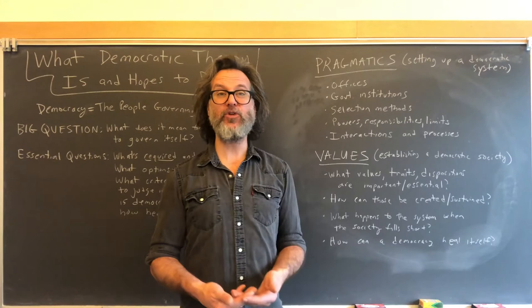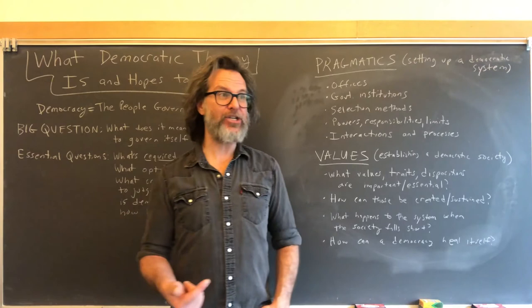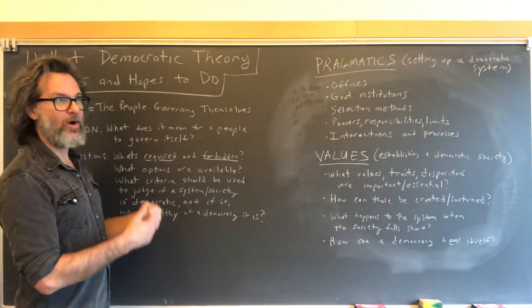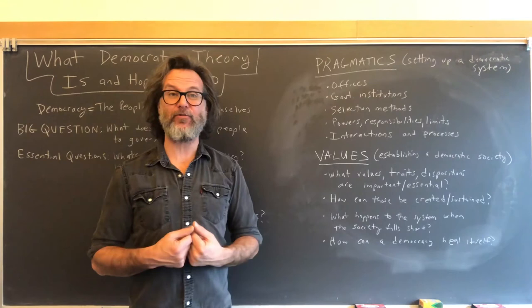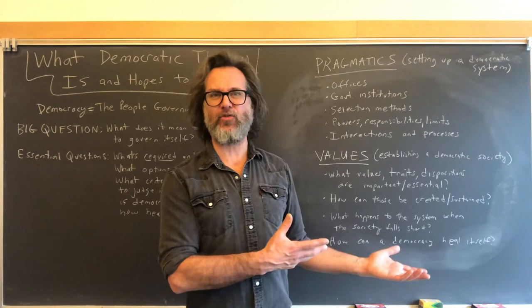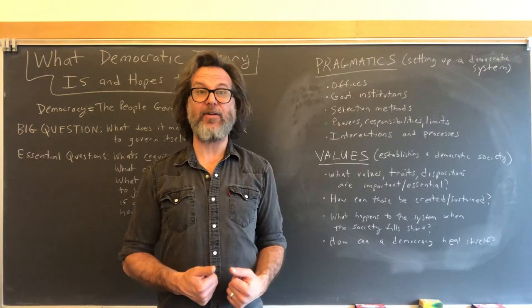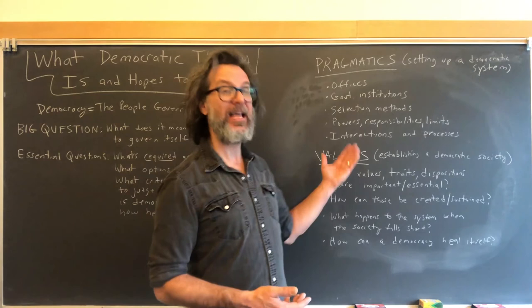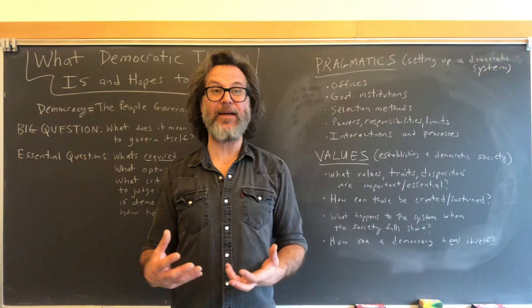What happens to the system when the society falls short? This is where we pay attention to when we have formally a democratic system, but the democratic society doesn't align — it doesn't fully live up to it, it's not healthy. And the final question is: how can a democracy heal itself? If the democratic society is drifting away from important values and dispositions, what can be done within the democratic system itself to promote healing?